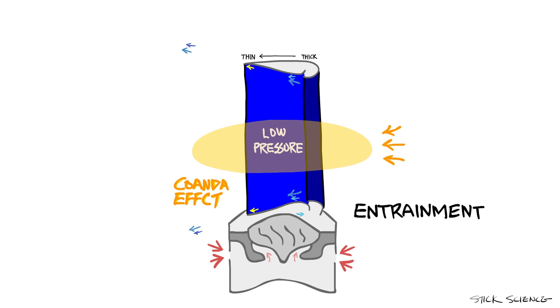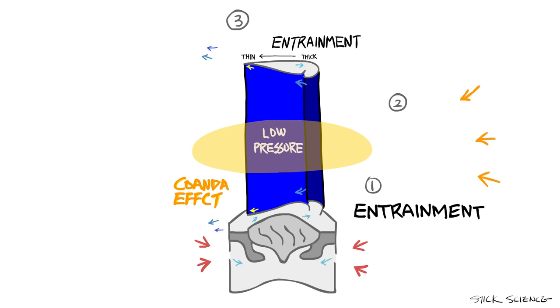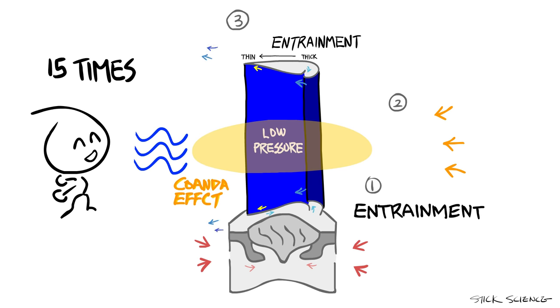Finally, the jet of air exiting the ring further entrains air from the outer regions, again adding to the air flow. As a result of these mechanisms combined, initial air flow is multiplied approximately 15 times, keeping your hot face cool all throughout the summer.